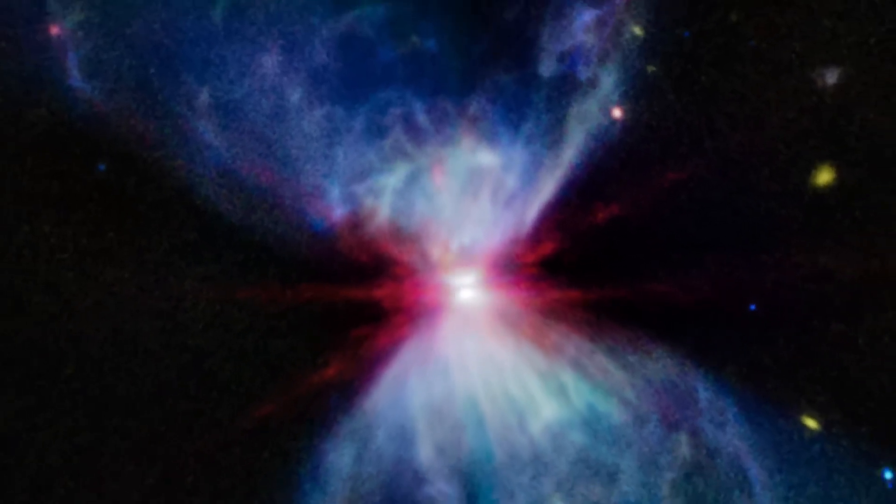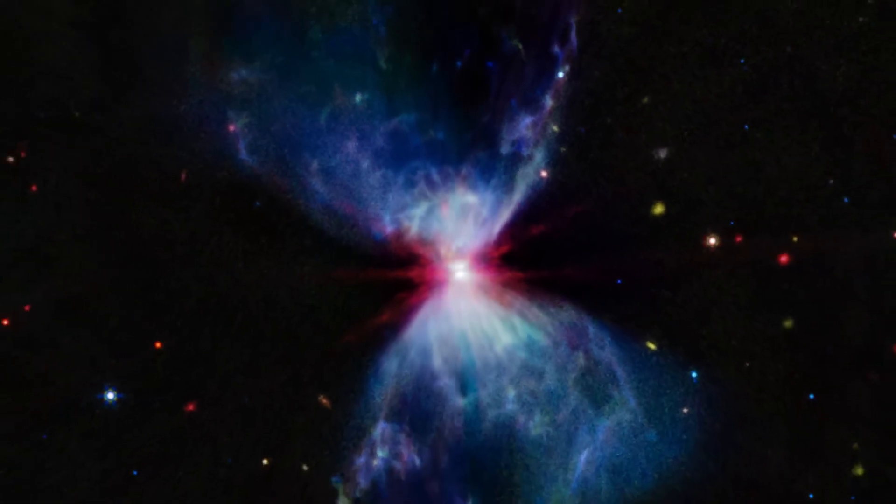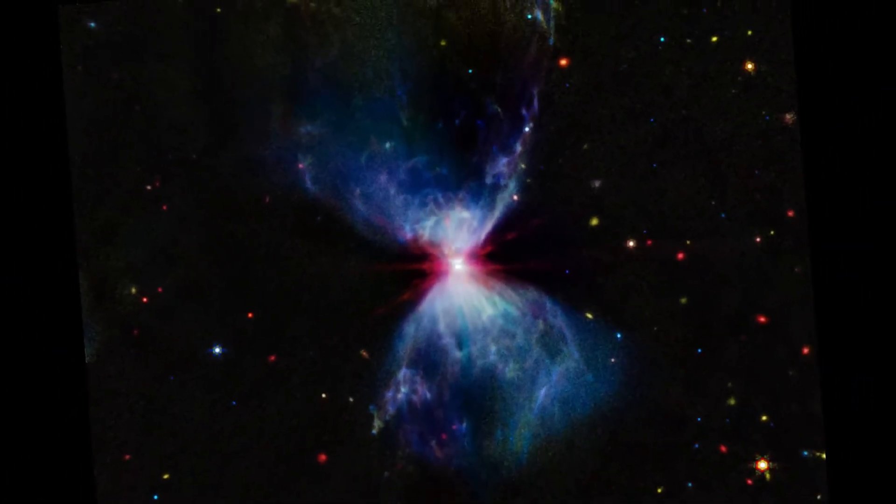This creates a dense disk of material, known as an accretion disk, which feeds material to the protostar.